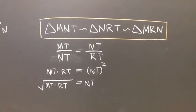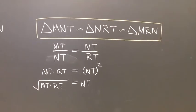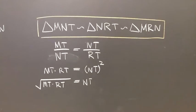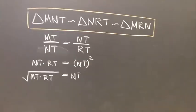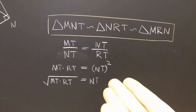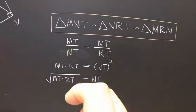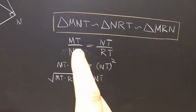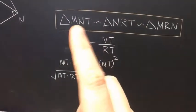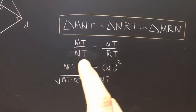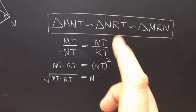Well, why is the similarity relationship so important? Answer: because from it, we can get our proportion. So I can take MN over NT, or MT over NT, and write that as NT over RT.